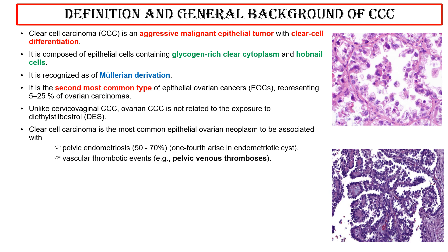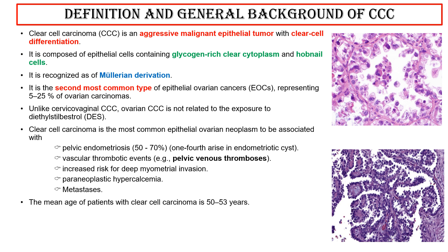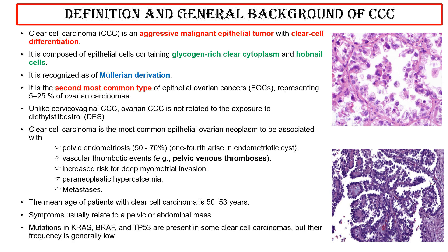Associated conditions include vascular thrombotic events such as pelvic venous thrombosis, increased risk for deep myometrial invasion, paraneoplastic hypercalcemia, and metastasis. The mean age of patients is 50 to 53 years; symptoms usually relate to a pelvic or abdominal mass. Mutations in KRAS, BRAF, and TP53 are present in some clear cell carcinomas, but their frequency is generally low.